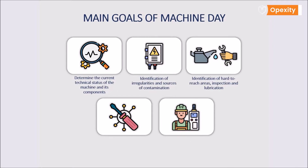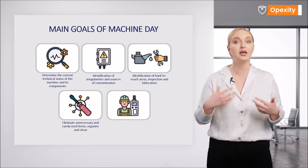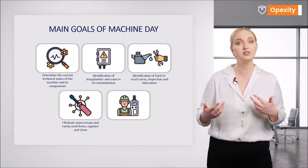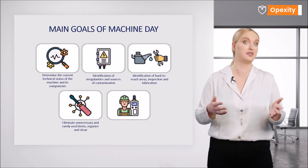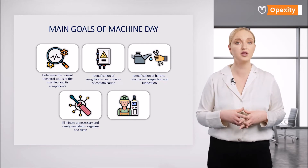The next objective is simple selection, which you already know well if you have watched the 5S method course on our platform. If not, I will also recommend this topic as a basic tool to use before implementing TPM. Using a machine's stop, we remove all unnecessary items, tools, fixtures, etc.